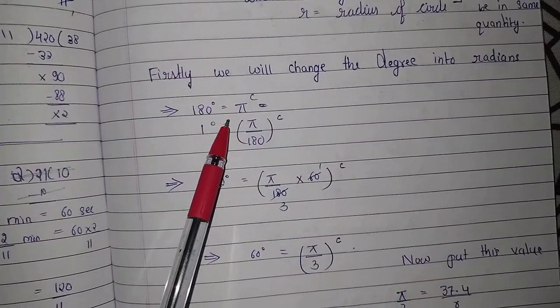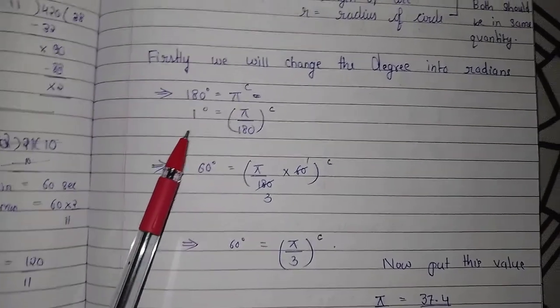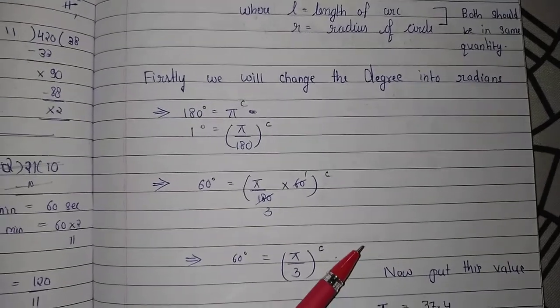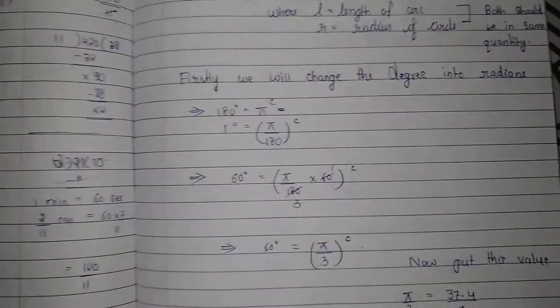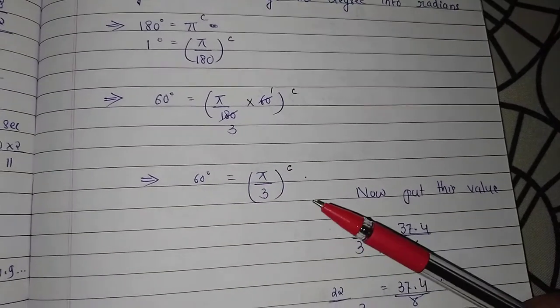Then 60 degrees equals pi upon 180 times 60, which equals pi upon 3 radians.